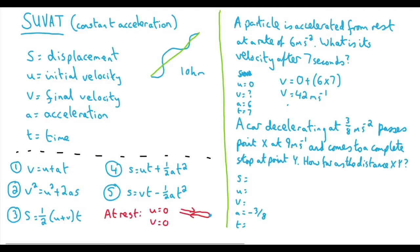Now, passing point X at nine. So we'll start our model at point X. So the nine is our U and comes to a complete stop at Y. So we're stopping at Y at both our model and the car is stopping. If it's come to a stop, then its final velocity is zero. And how far is the distance X, Y?